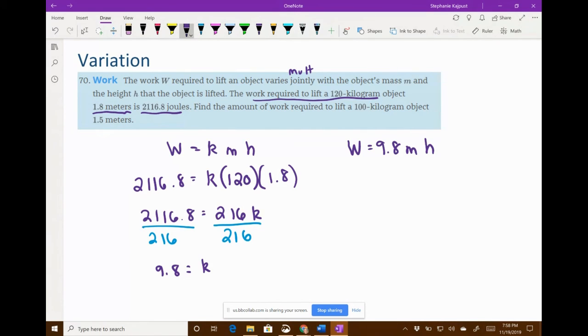Then I look at the last sentence where it says find the amount of work required to lift a hundred kilogram object. So they're giving us mass, which is in kilograms. So M is 100, and then you're lifting that 1.5 meters. So that's your H. So that last sentence, they're now giving us other numbers to plug in so that we can find what the work is. So then I just multiply 9.8 times 100 times 1.5.